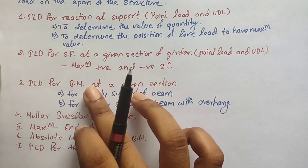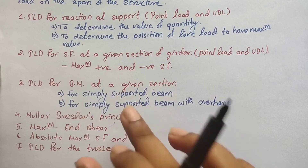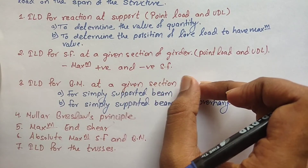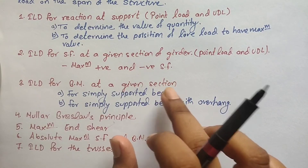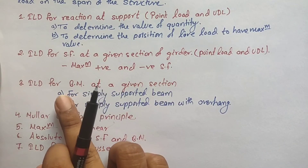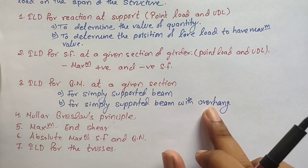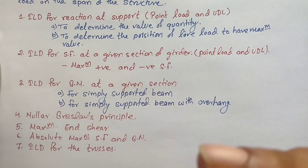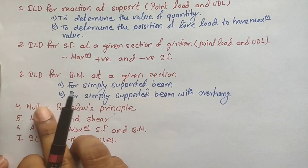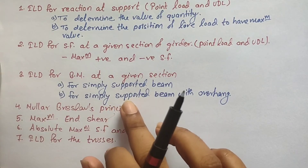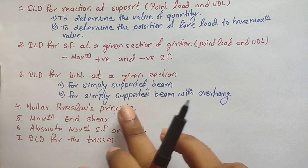The third topic is the Influence Line Diagram for bending moment at a given section, covering both point load and UDL cases for simply supported beams as well as simply supported beams with overhang. Each case will be discussed with a proper example. After that, we will cover the Müller-Breslau principle, including the concept and examples based on it.